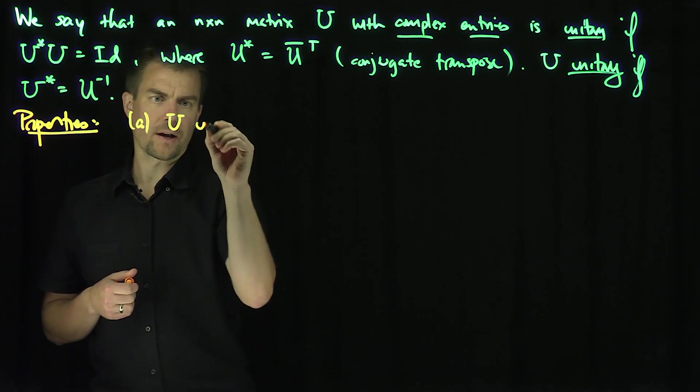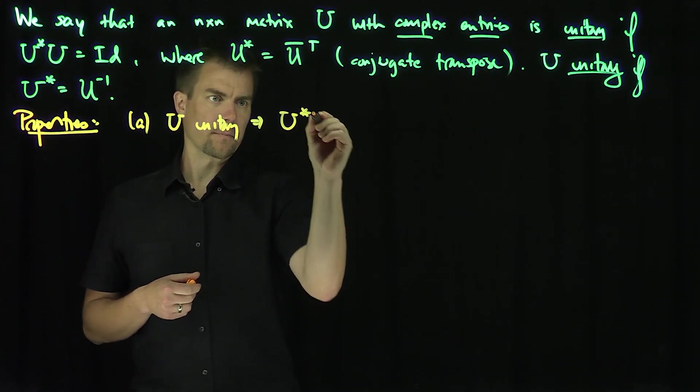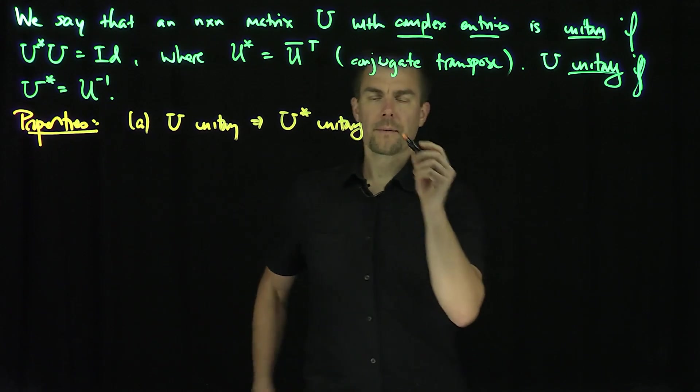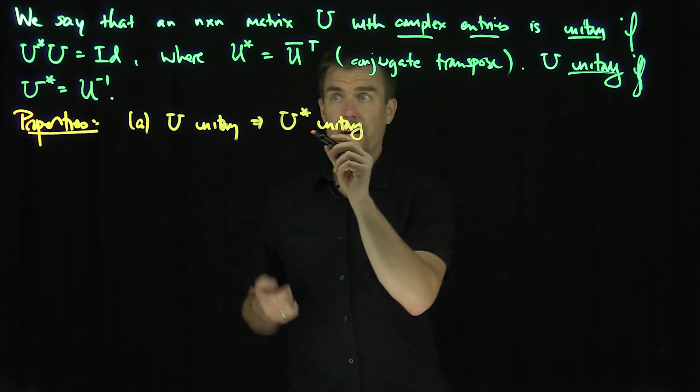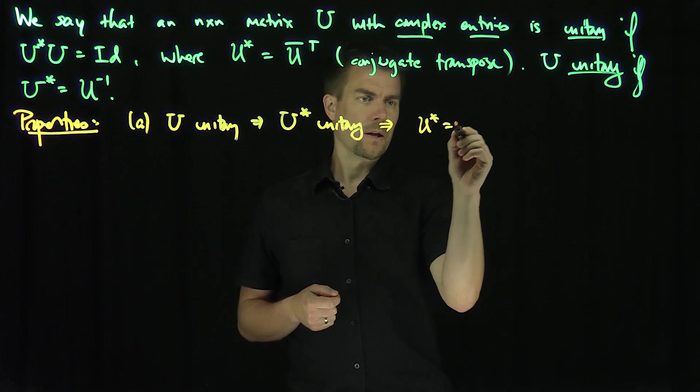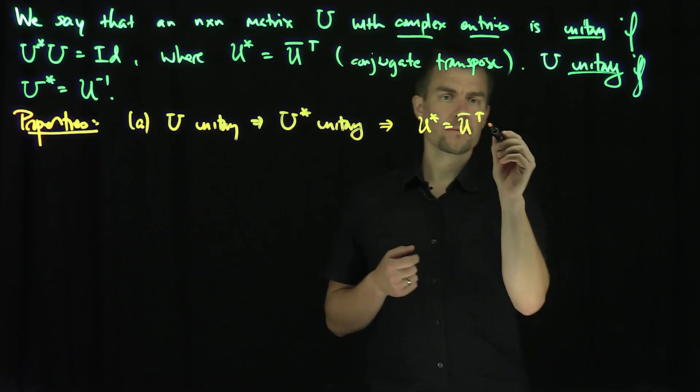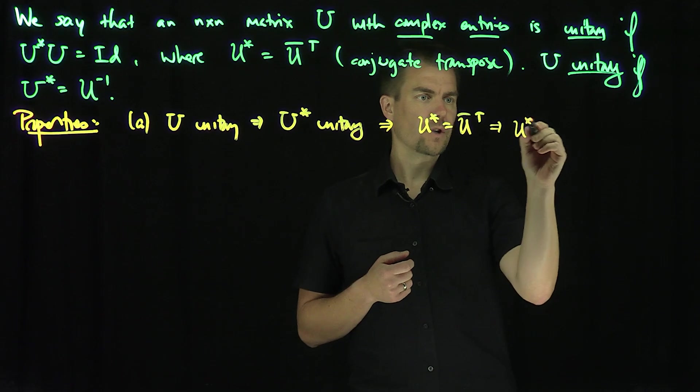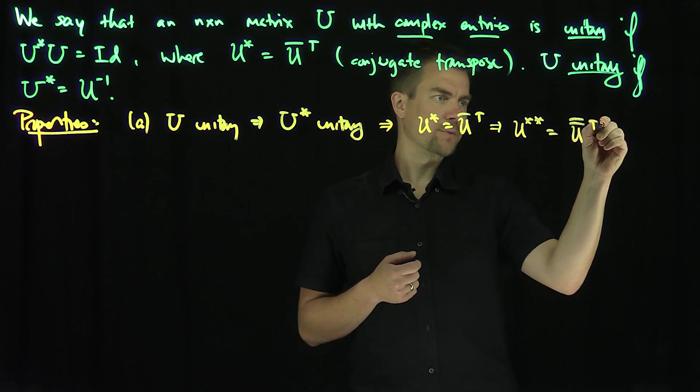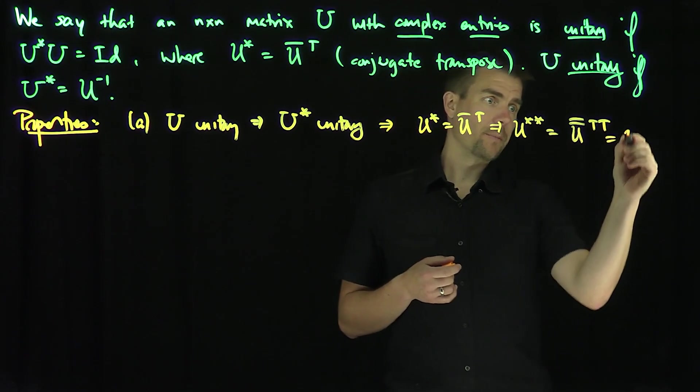If U is unitary, that implies that U star is unitary. Let's prove that straightforward. In other words, if I did the conjugate transpose of U star, so U star is U conjugate transpose. So if I did U star star, that's U conjugate conjugate, transpose transpose. And both conjugate and transpose are involutive operators, so this is just basically back to U.